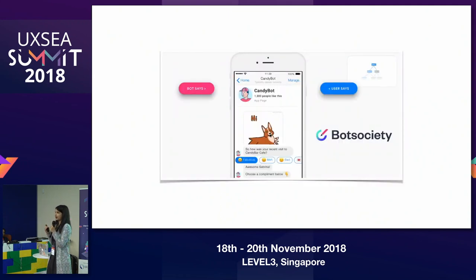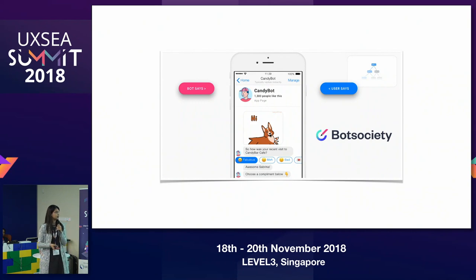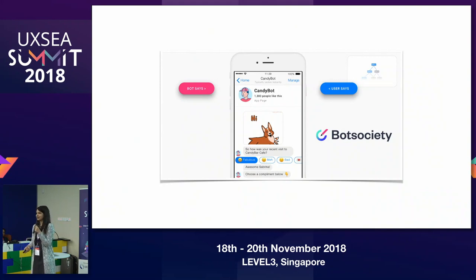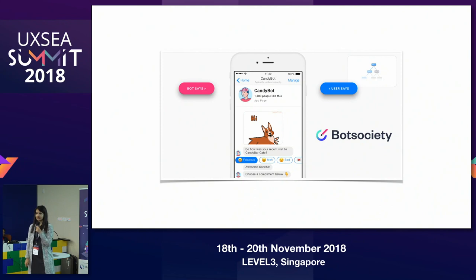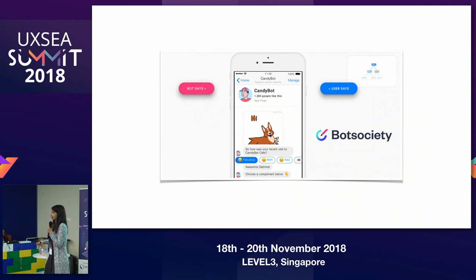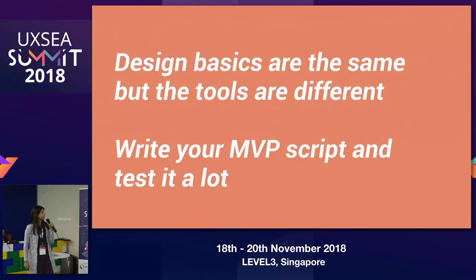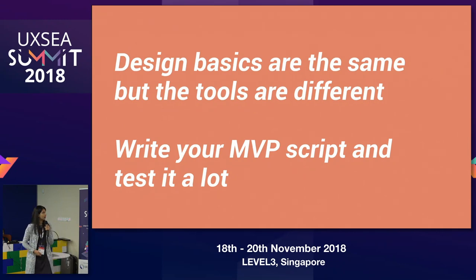Once you have your MVP script and conversation tree in place, prototype it — obviously. We actually built the prototype after it went live because it went live pretty fast. I've tried a few tools and I like BotSociety — feel free to explore, it was pretty easy to use and simple. You can share a clickable prototype with the team, the customer support team, and the product team and business so they understand exactly what you're doing. Design basics are the same, but the tools are different. Write your MVP script and test a lot.